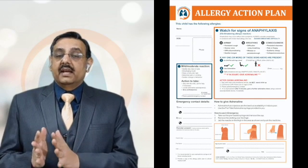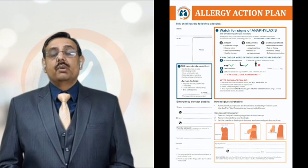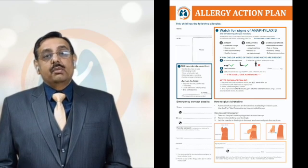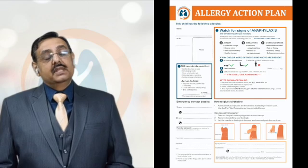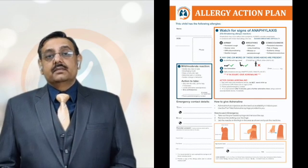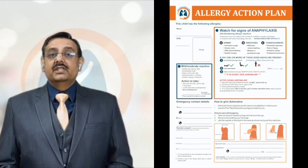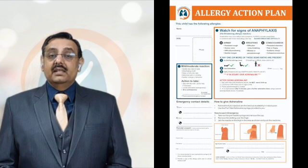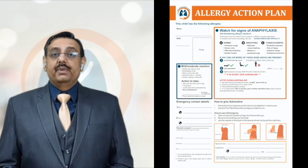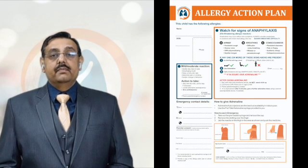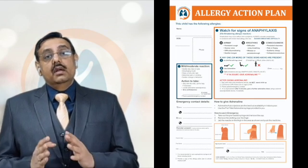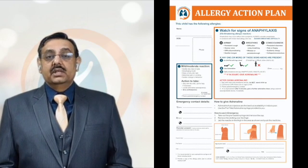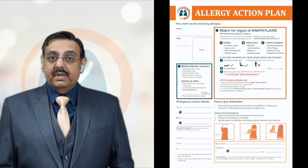But if the symptoms are getting severe — in the form of shortness of breath, dizziness, fainting, vomiting or abdominal cramps — these might be signs of anaphylaxis. The allergy action plan would guide you that in this situation, the best treatment would be injectable epinephrine. Every parent or caregiver of a child who has wheat allergy needs to know how to administer epinephrine.